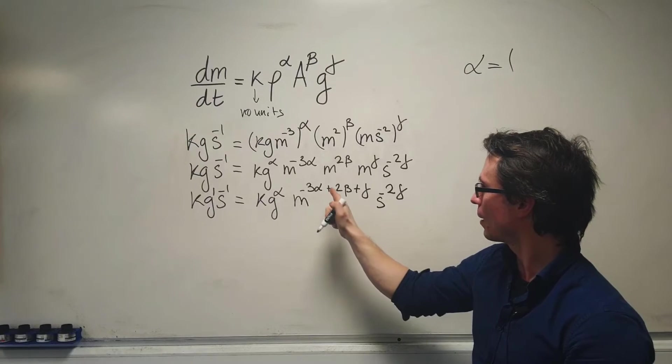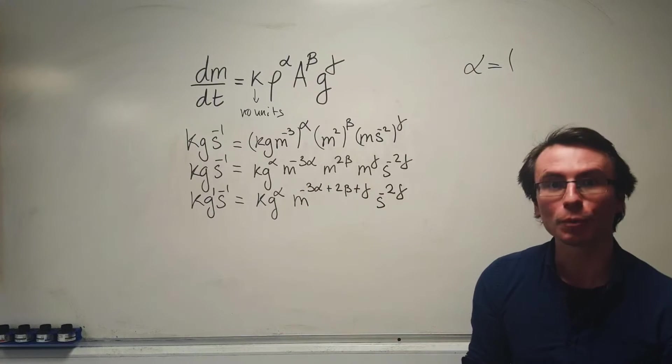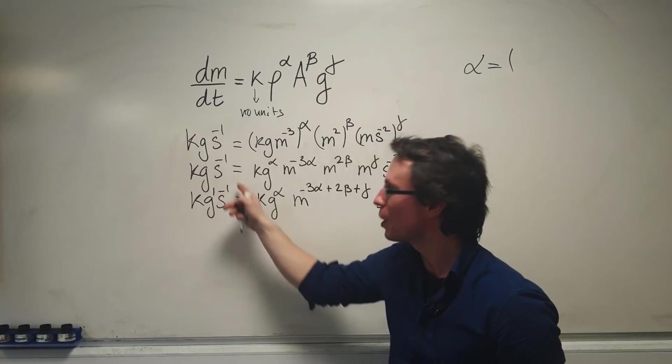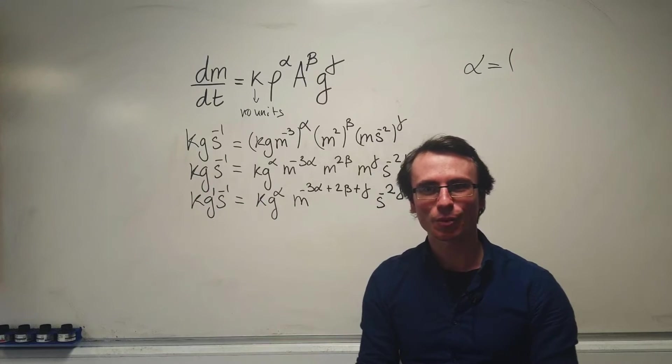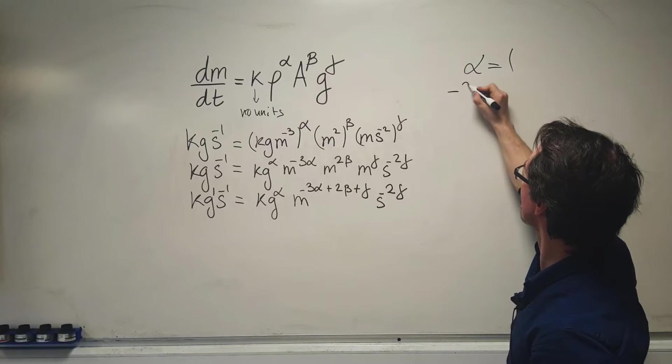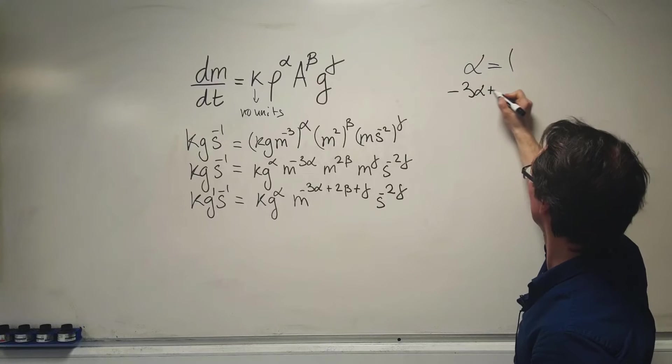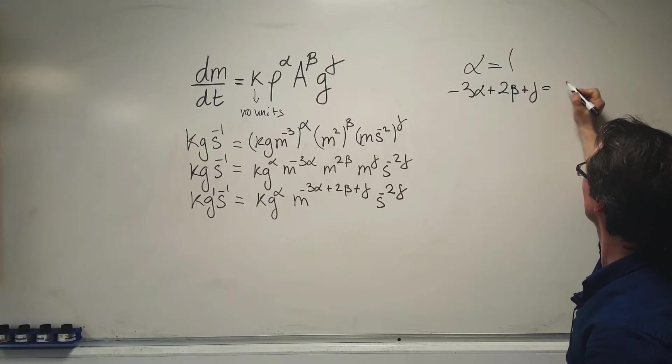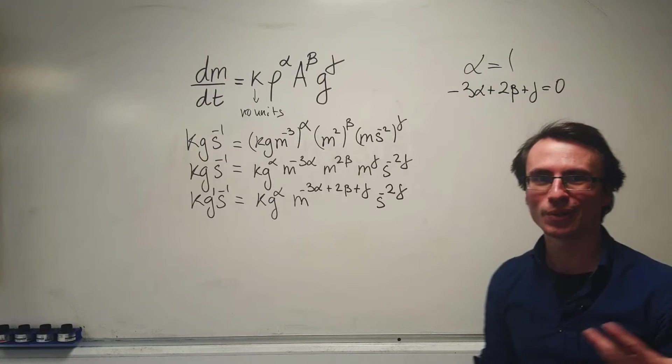The meters must equal zero because there are no meters on the left side. So -3α + 2β + γ = 0.